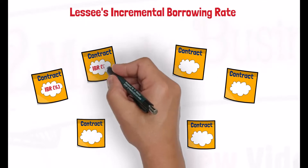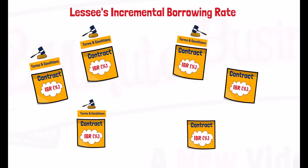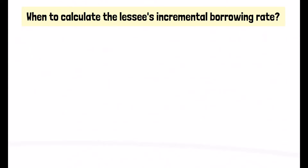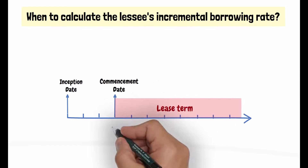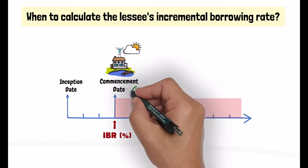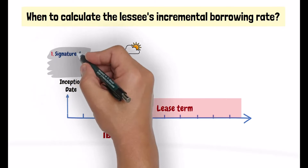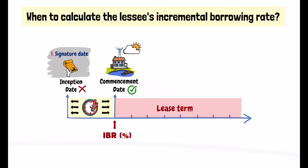The lessee's incremental borrowing rate should be estimated for every individual lease transaction, as each lease agreement has its own terms and conditions. It is not a rate that is calculated once and for all. The lessee's incremental borrowing rate should be estimated on the commencement date of the lease — the date on which the asset is made available for use by the lessee — and not the inception date, which is the date of signing the agreement, as the lease agreement might be signed before its commencement date with a considerable amount of time.